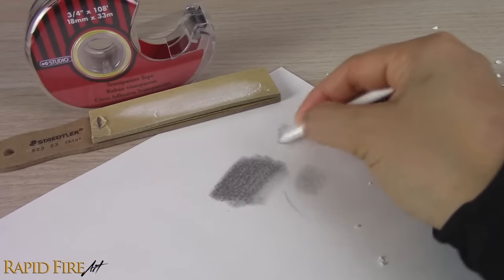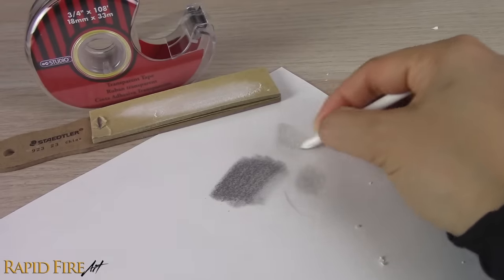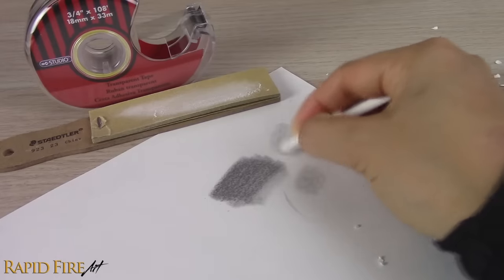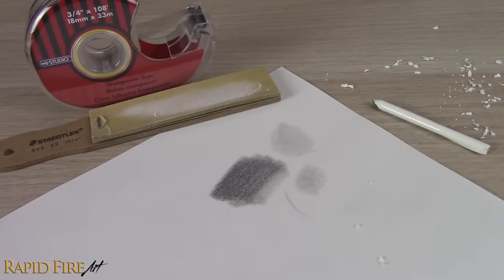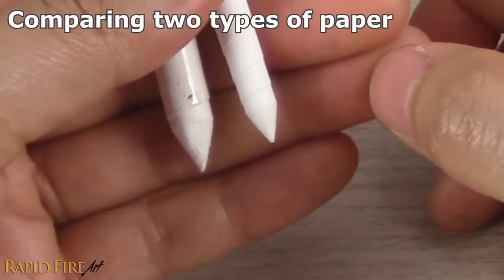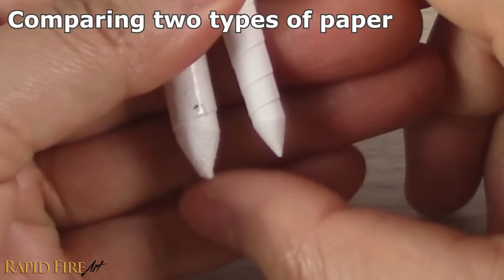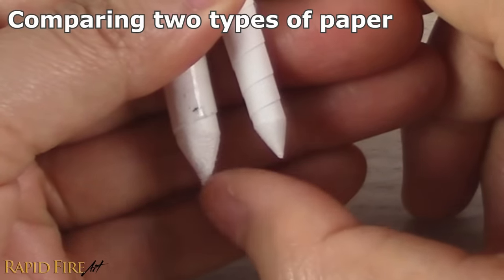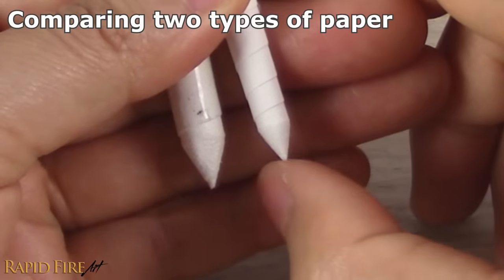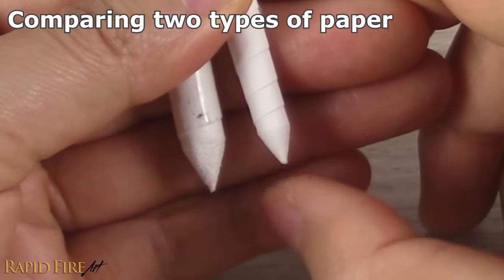Make a few more blending stumps using different types of paper you have laying around the house, to find the best blending stump that suits your personal needs, and test each one against each other. Maybe you'll find that one type of paper is too soft for precision blending, because the tip is not stiff enough, but maybe the side allows you to blend very smoothly.